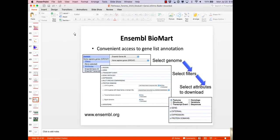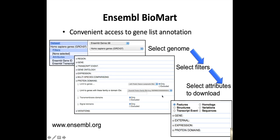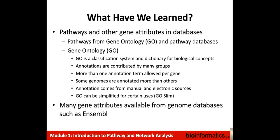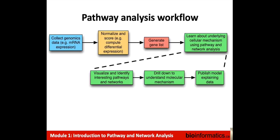Getting back to our presentation — that's Ensemble Biomart. What have we learned? Pathways and other gene attributes and databases exist, and there are many different types. We can get pathway information from Gene Ontology and pathway databases. Gene Ontology is a classification system and dictionary for biological concepts. There are many types of annotations contributed by different groups, more than one annotation term per gene is allowed, some genomes are annotated better than others, and annotation comes from manual and electronic sources. Gene Ontology can be simplified for certain uses using GO Slim, and many other gene attributes are available from genome databases like Ensemble.